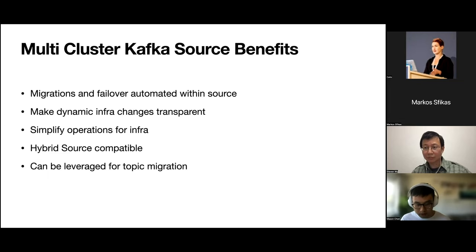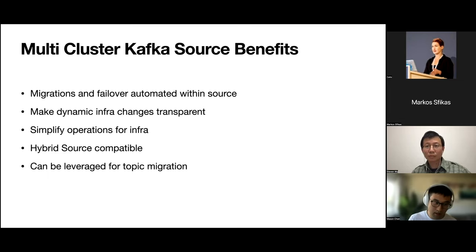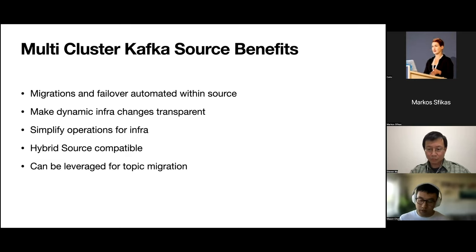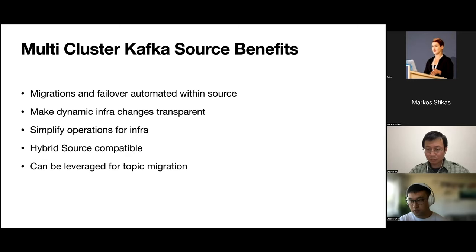In addition, this is hybrid source compatible. There are other solutions for reading from multiple Kafka clusters, like doing a union of Kafka sources, but that's not compatible with the hybrid source. The multi-cluster Kafka source can be leveraged for many use cases including topic migration — any metadata changes it can support. In open-source Kafka source, removing a topic is not supported due to how splits are checkpointed. This multi-cluster Kafka source can be interpreted as a generalization of the Kafka source — it can read from one cluster, but also from multiple clusters, making it a major advantage for scalable and dynamic Kafka architectures. Hopefully you see the advantages of our source's ability to reliably adapt to dynamic, scalable infrastructure. We're eager for community interest — please reach out to me by email or on the Flink mailing list.